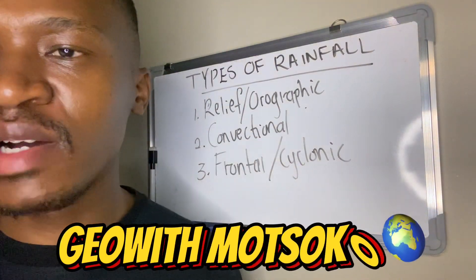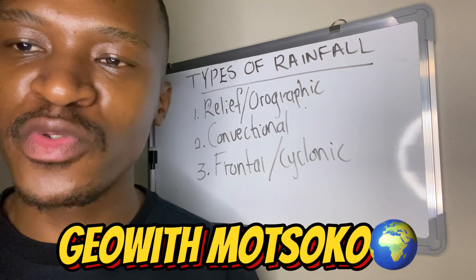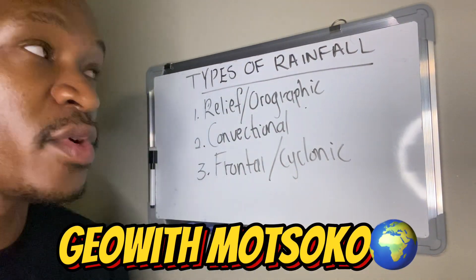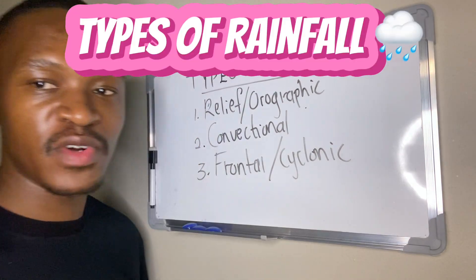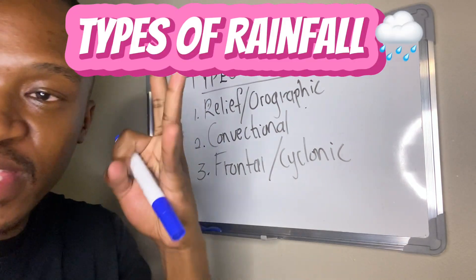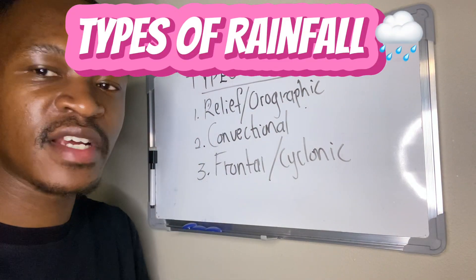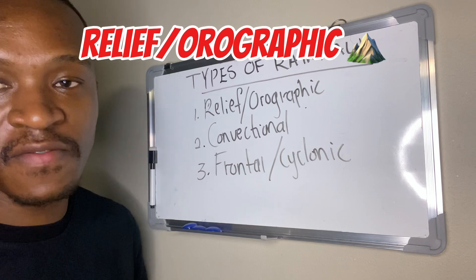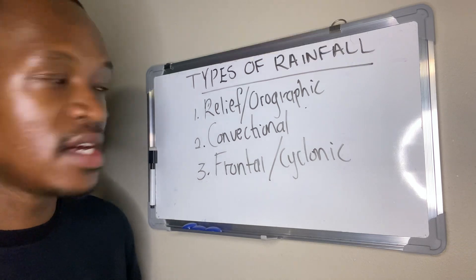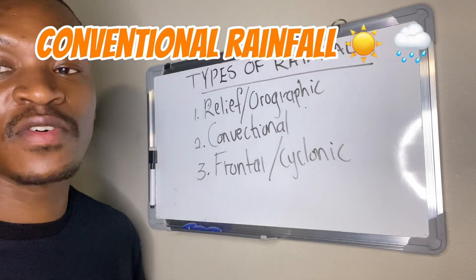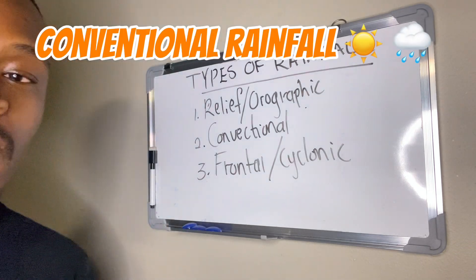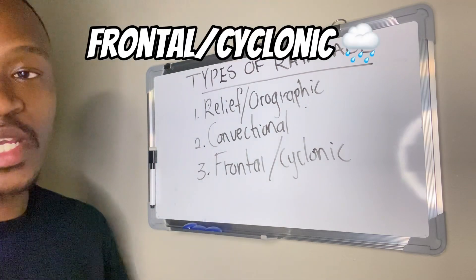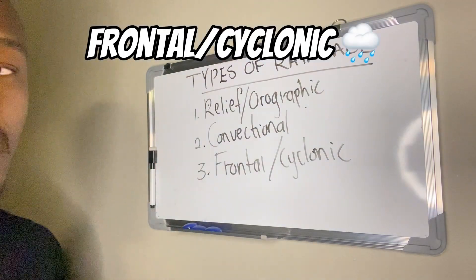Hey guys, welcome to Geo with Mutsuko. In today's video we are covering the topic of types of rainfall. Now we have three types of rainfall: relief or orographic rainfall, convection or convectional rainfall, and frontal or cyclonic rainfall.